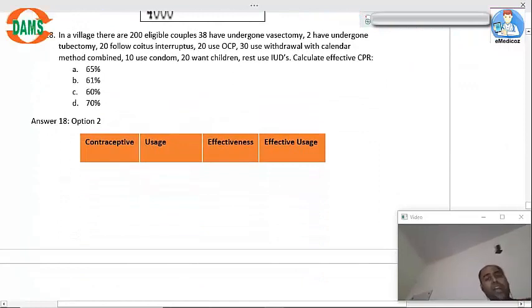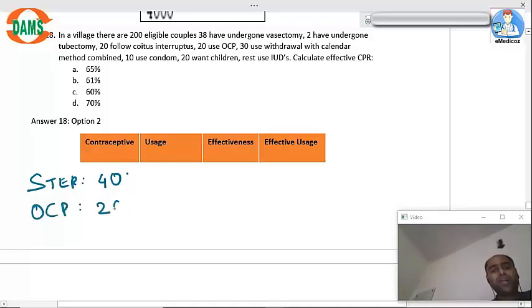In a village there are 200 eligible couples. 38 have undergone vasectomy, two had undergone tubectomy, so sterilization is 40. Copper T plus 20, we don't count that. OCP is 20. Condom users are 10. Now IUD, if you add the IUD properly, the IUD over here will come as 60.